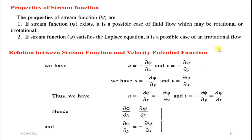Properties of stream function: First, if stream function xi exists, it represents a possible case of fluid flow which may be rotational or irrotational. Second, if stream function xi satisfies the Laplace equation, it is a possible case of irrotational flow.